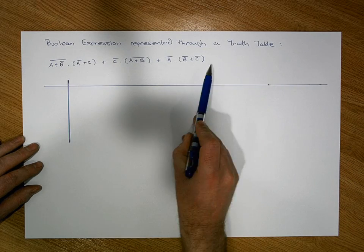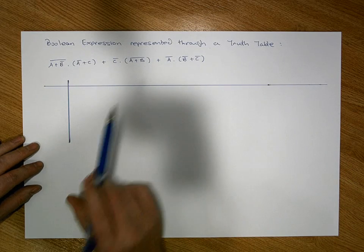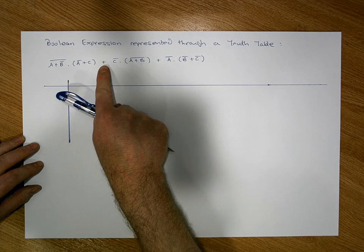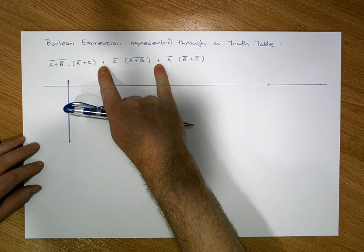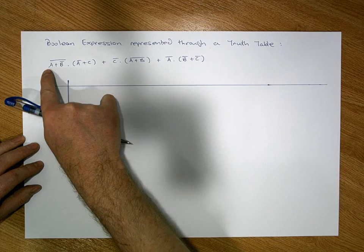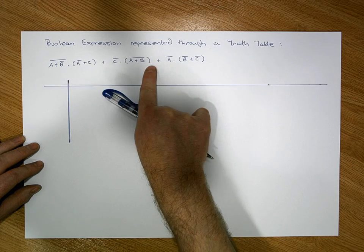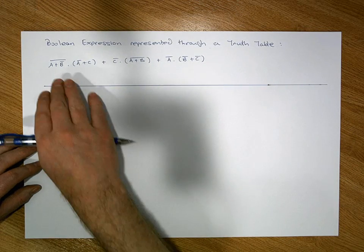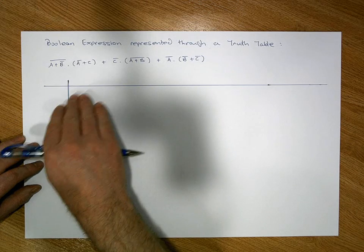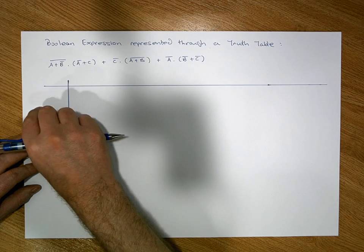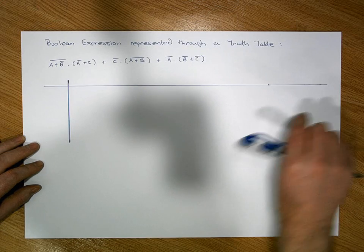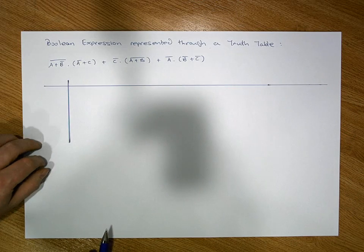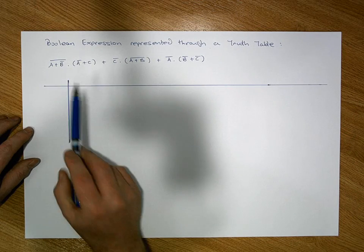The boolean expression we're going to concentrate on has three main terms separated by ORs or pluses. We have the first term, the second term, and the third term. What we're going to do is systematically build a truth table that represents this particular overall expression.